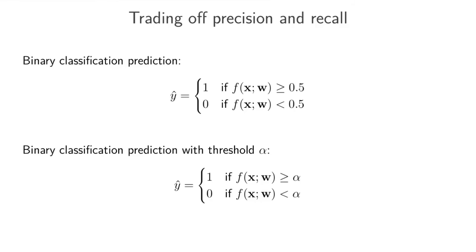We've looked at the definitions of precision and recall - let's get an intuition for how we trade these off in practice. What we've implicitly been doing in binary classification is saying: if the model output is larger than 0.5, classify as positive; if smaller than 0.5, classify as negative. But this implicitly weighs positive and negative classes equally, and as we've discussed with precision and recall, we might not want that.